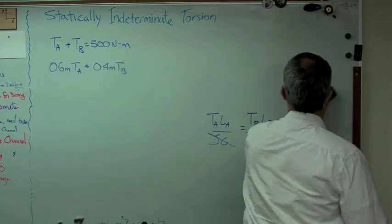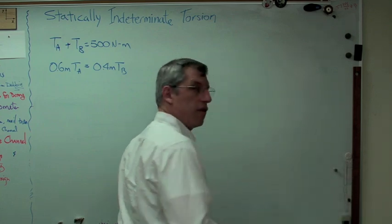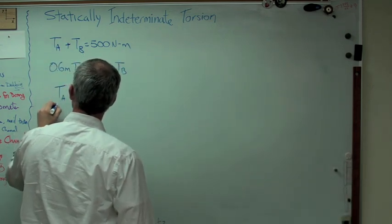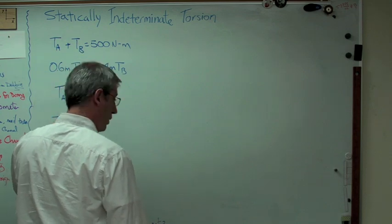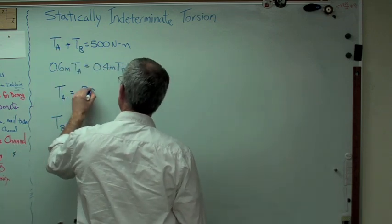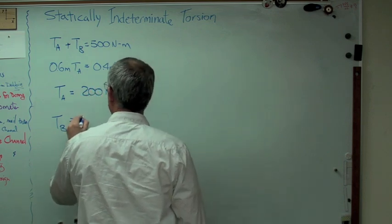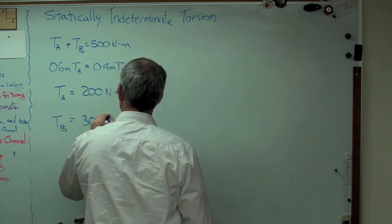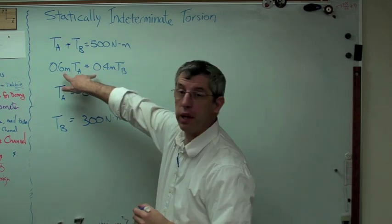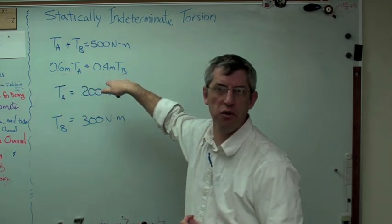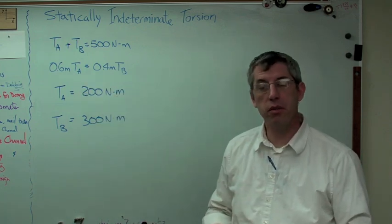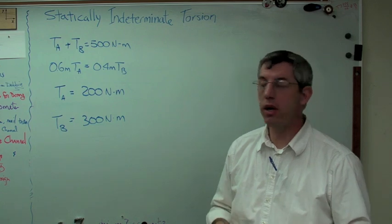Well, you can solve it by substitution or however you want. You're going to work this out, and you're going to get these numbers. TA is 200 newton meters, and TB is 300 newton meters. Well, notice that the two lengths are related by the ratio of 3 to 2. 6 to 4 is the same as 3 to 2. And so are the torques. So it makes sense. It passes the sniff test. It seems plausible.